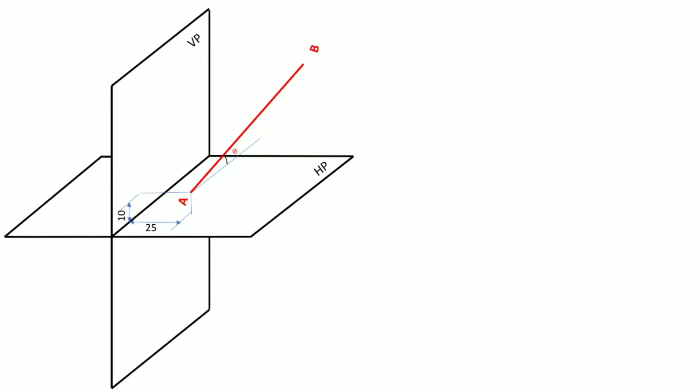To project this line on both planes, we have to assume the line is parallel to one of the planes first. We will rotate this line until it becomes parallel to the vertical plane, but we have to make sure it is not changing its inclination with the horizontal plane. So we have rotated this line until it becomes parallel to the vertical plane without changing its inclination with the horizontal plane — meaning the inclination will remain theta with respect to the horizontal plane. So we get a new line which is parallel to the vertical plane.